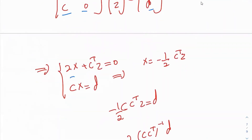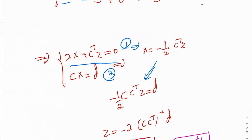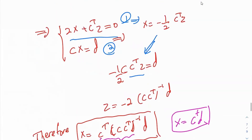From the first equation, write X in terms of Z: X equals negative one-half C transpose Z. Plug that into the second equation: C times negative one-half C transpose Z equal to D. Now, we need C to have linearly independent rows — this is the condition. If C has linearly independent rows, then C C transpose is invertible.